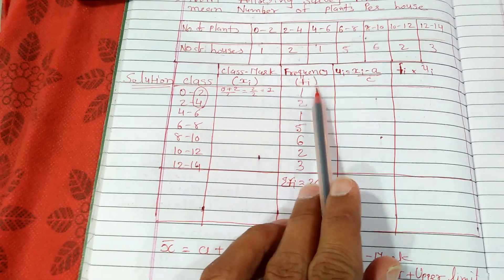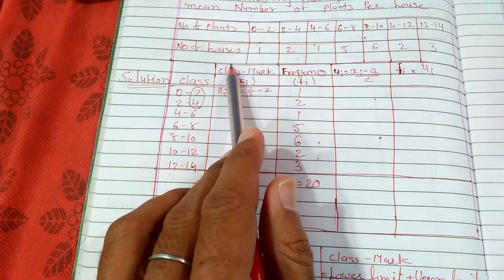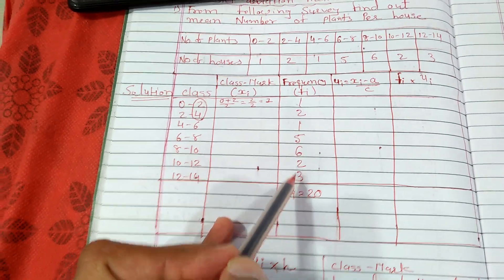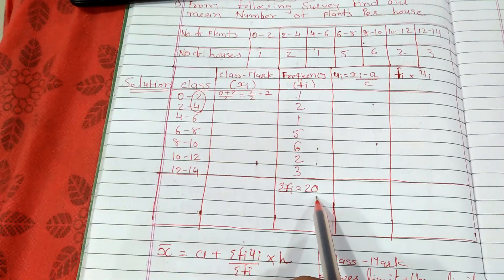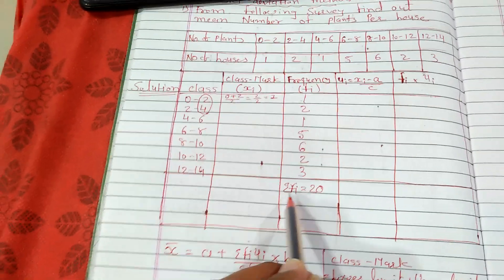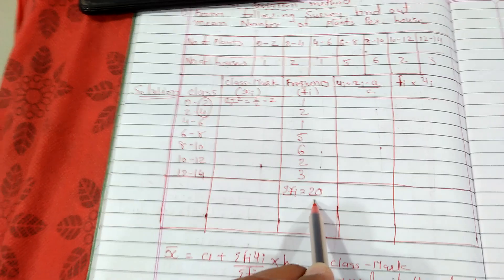The third column is of frequency, which also we take from the question itself. These are all the frequencies that we write in the third column. Now we will sum up all these frequencies. It will be 20, so Sigma Fi will be 20. Sigma stands for sum, Fi stands for frequency. Sum of frequency equals 20.